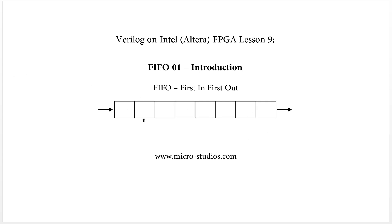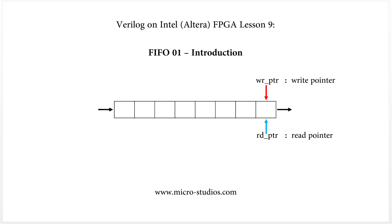Let's assume this is a FIFO — the data comes in from this side and goes out from this side. For the FIFO, for data write and data read, we usually will have a write pointer and a read pointer. At this moment the FIFO is empty — there is no data here, and the write pointer equals the read pointer.